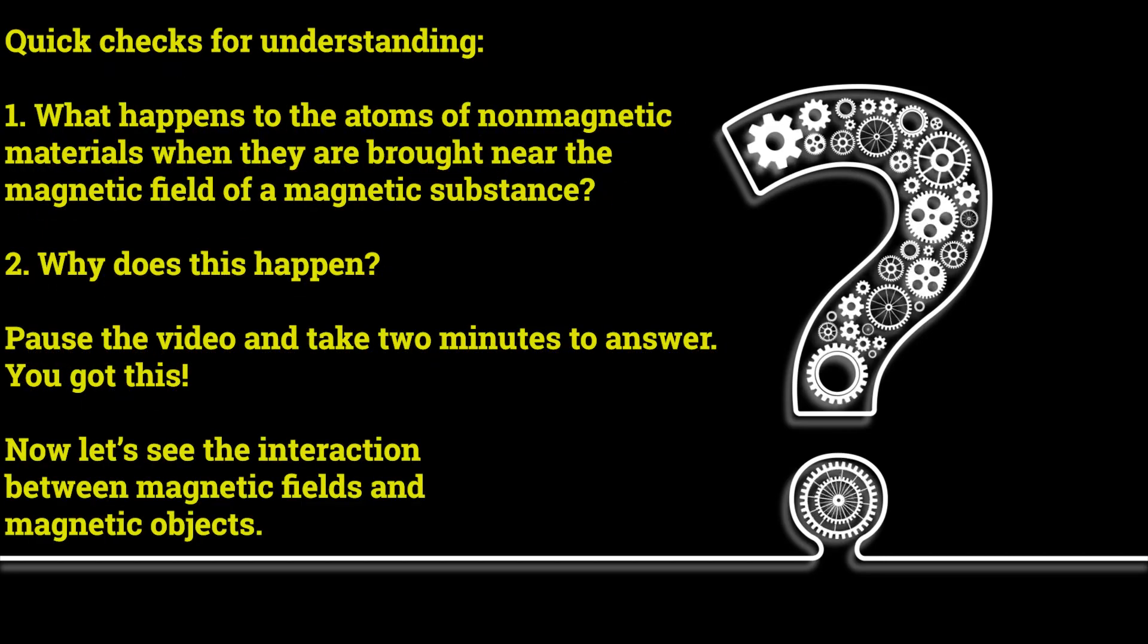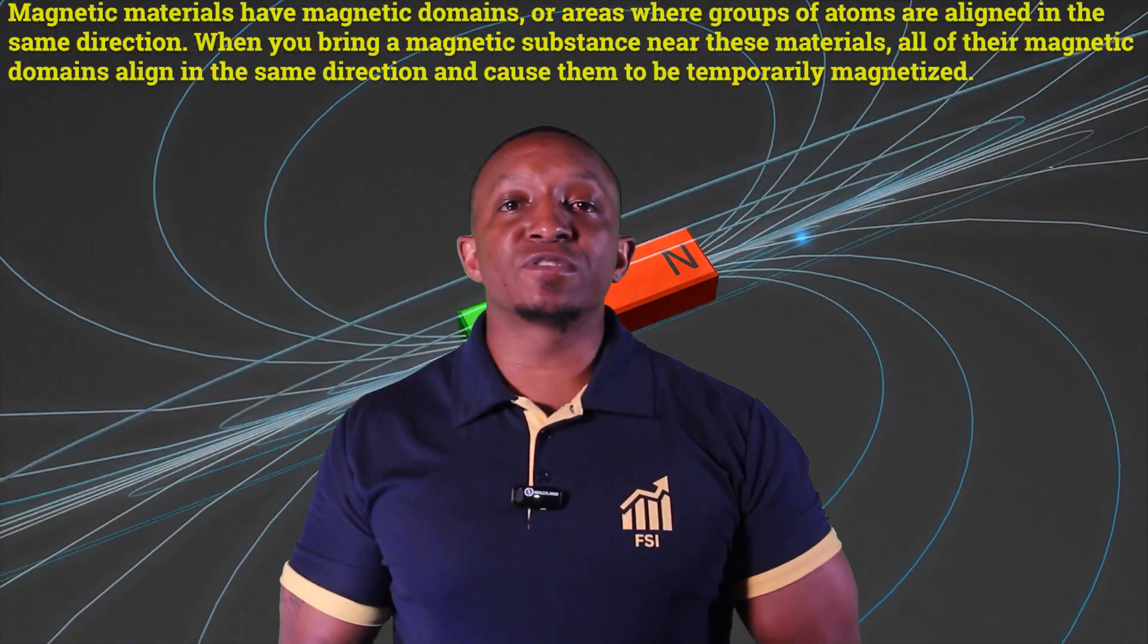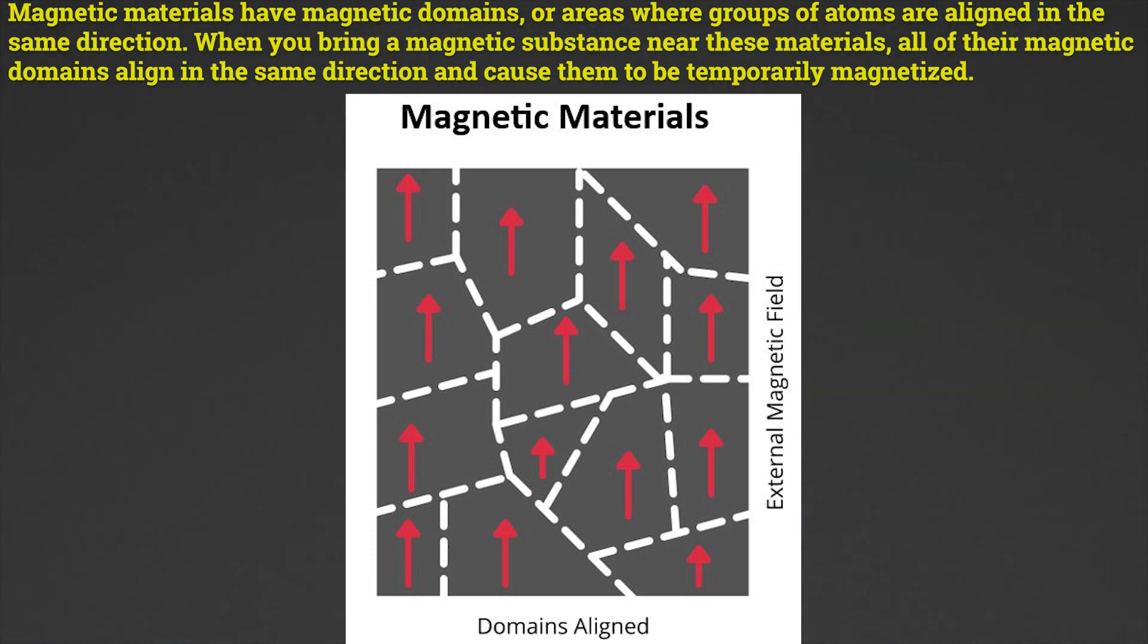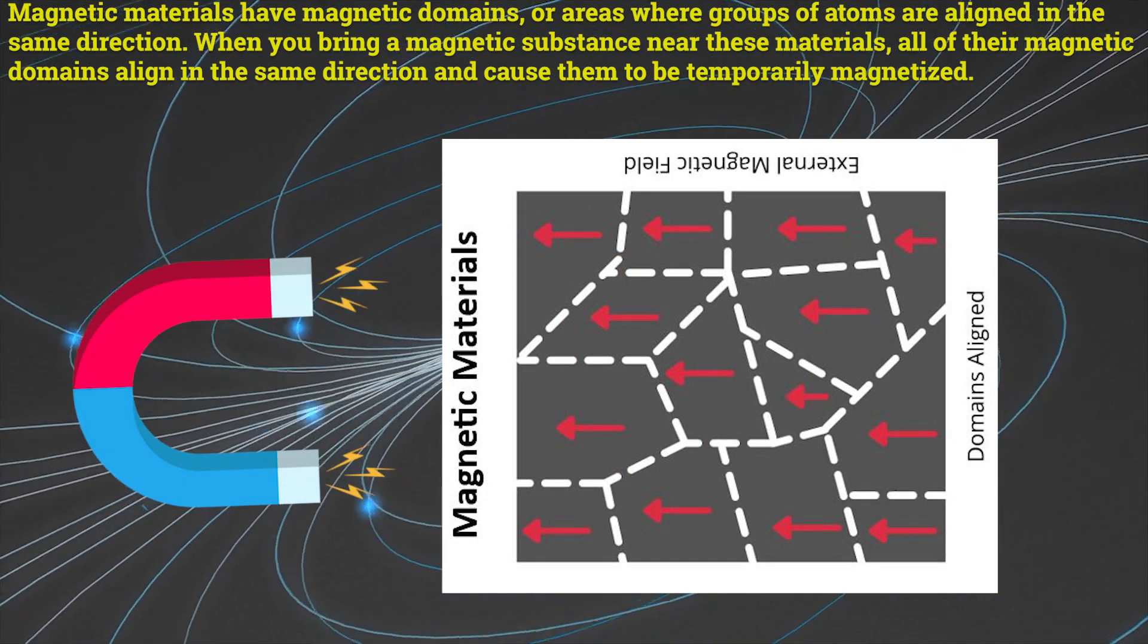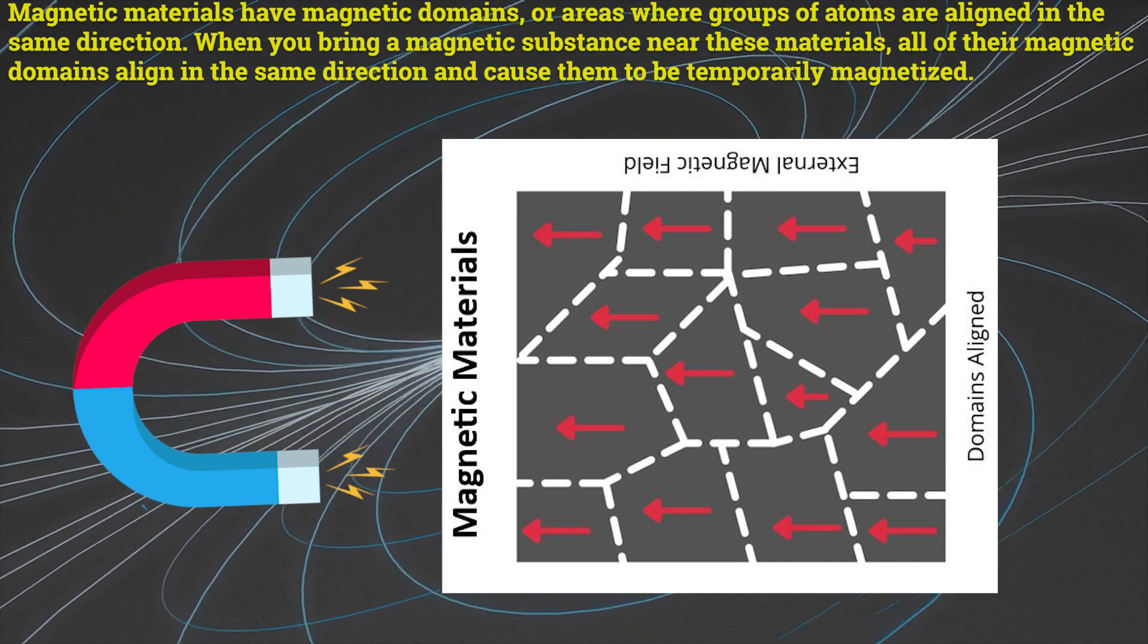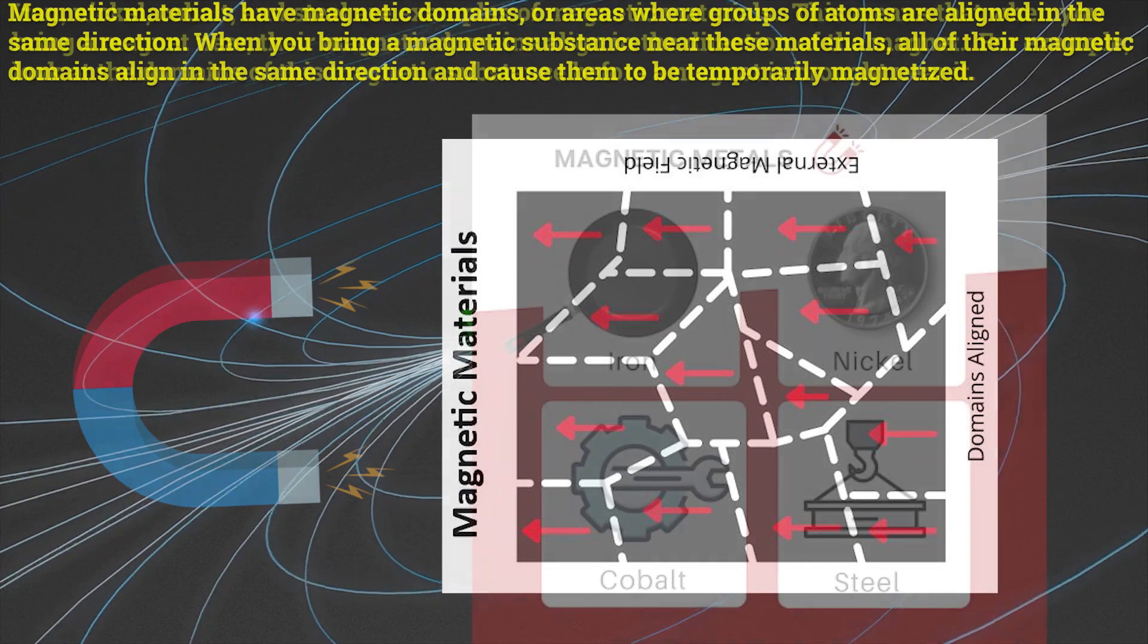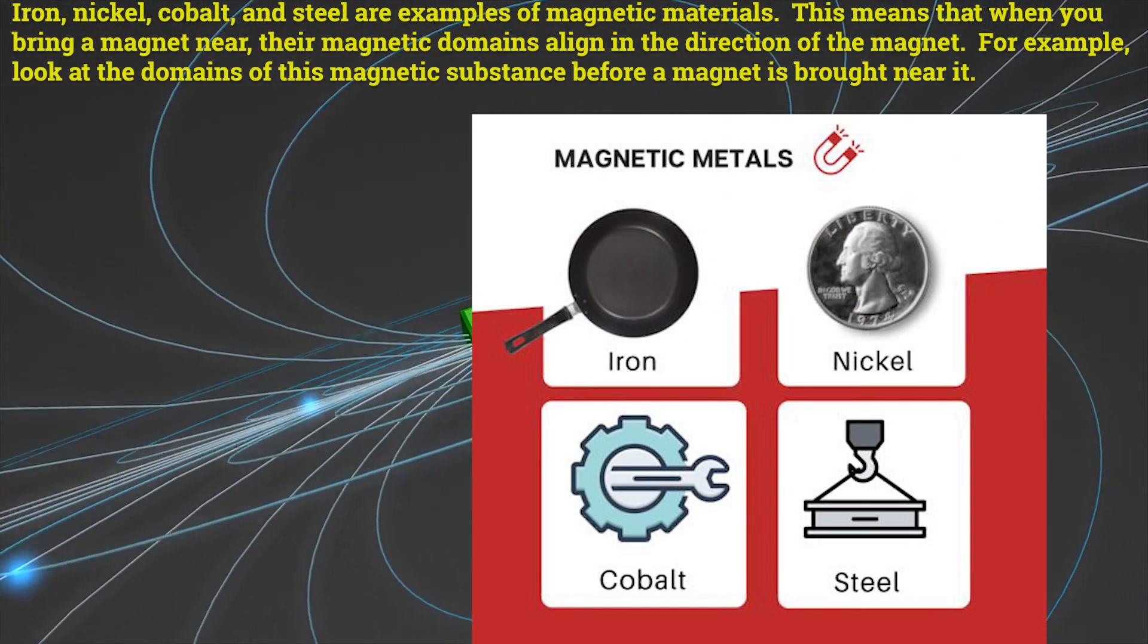Now let's see the interaction between magnetic fields and magnetic objects. Magnetic materials have magnetic domains or areas where groups of atoms are aligned in the same direction. When you bring a magnetic substance near these materials, all of their magnetic domains align in the same direction and cause them to be temporarily magnetized. Iron, nickel, cobalt, and steel are examples of magnetic materials.